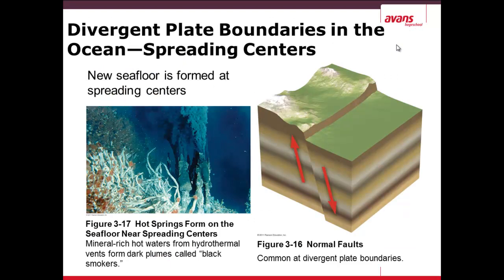Divergent plate boundaries can happen on the sea floor as well as on land. In Africa it's happening on land along the Eastern Rift Valley, but it can also happen underwater. These underwater divergent boundaries form very mineral-rich hot spring waters and hydrothermal vents, which are also called black smokers, because of the rich amount of nutrients coming upward. As the mantle has significantly higher concentrations of certain elements such as iron and nickel, these black smokers are black in color.